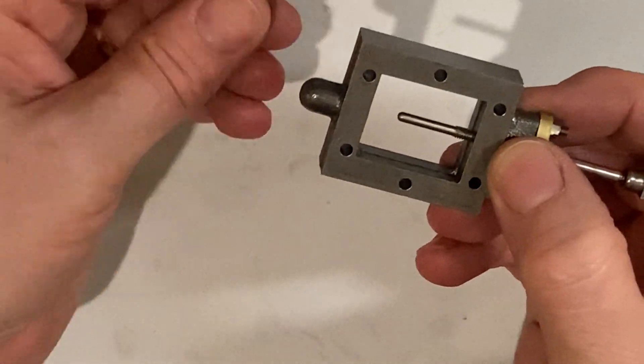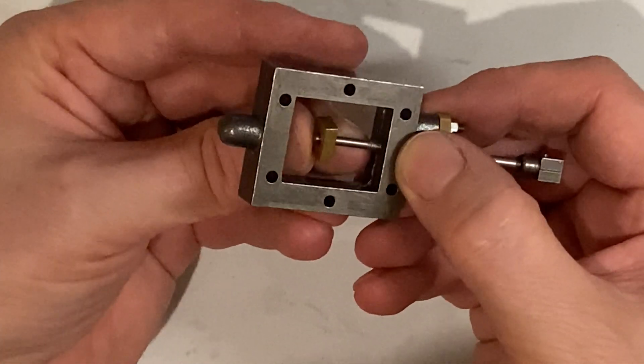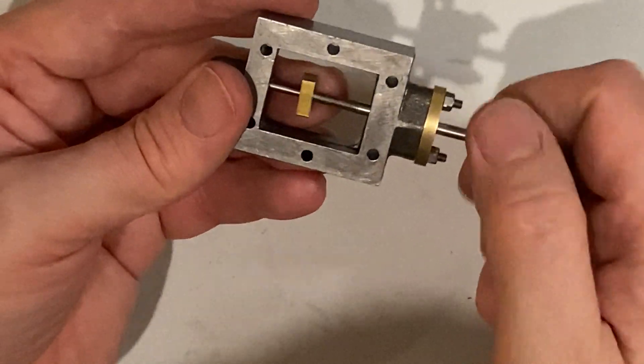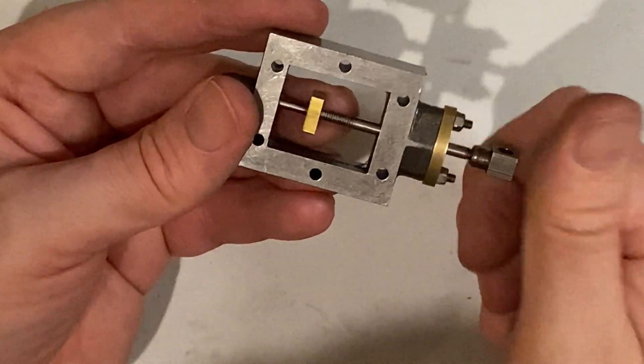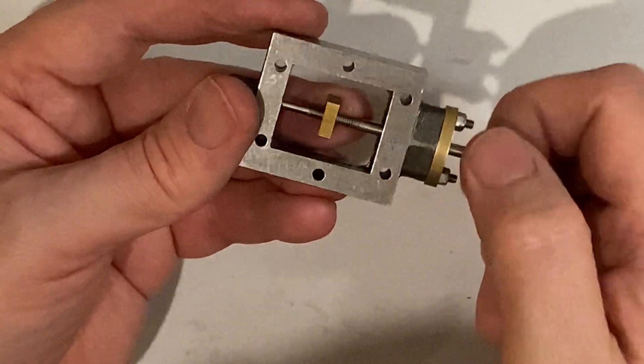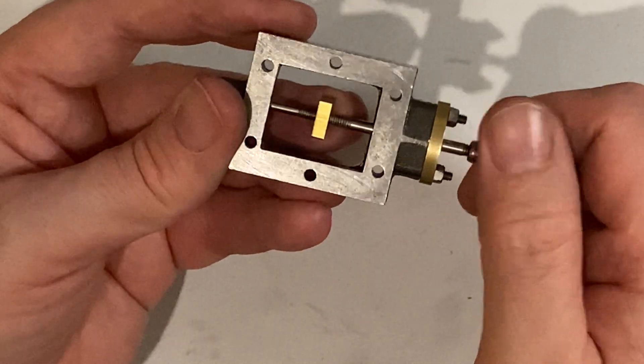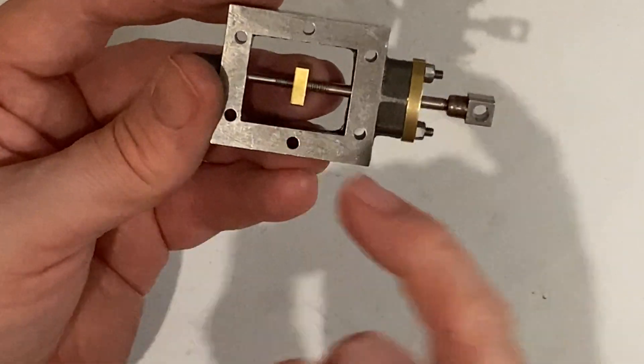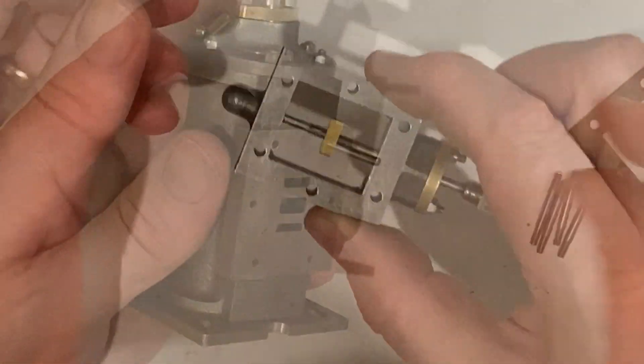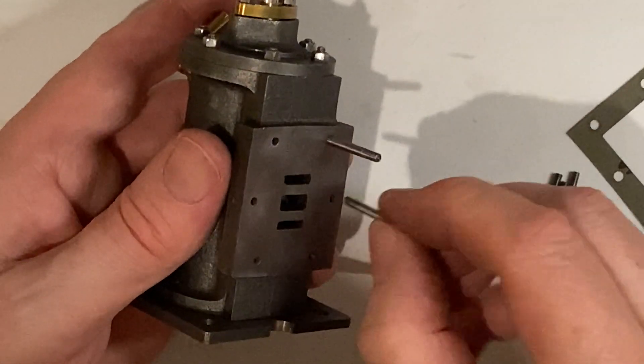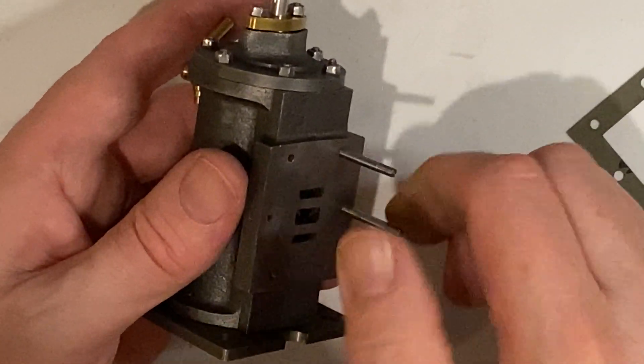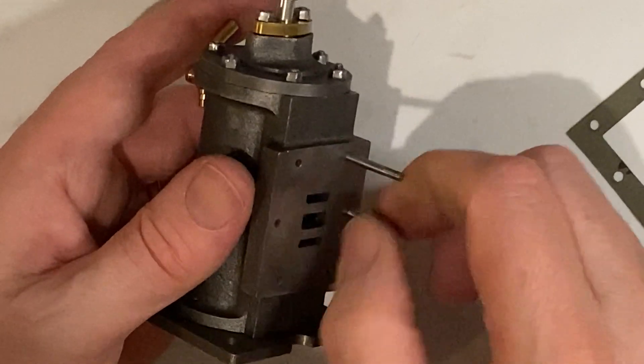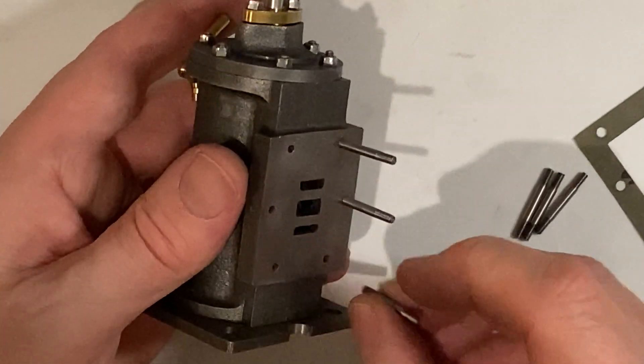Now we take the valve nut and we insert it onto the valve spindle and just spin it on and we wind it up until it's about halfway up the threads. The actual position will be adjusted later. Now we take the 7BA studs and just screw them into the valve face in the cylinder.